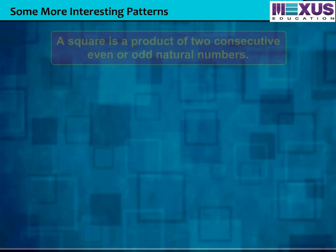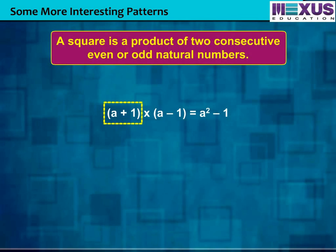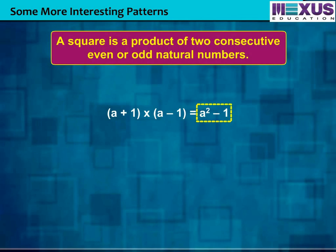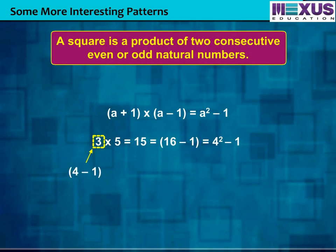Now we will learn about the next pattern of square numbers: the product of two consecutive even or odd natural numbers gives a square number minus one. Let us understand the concept using the formula: (a+1) into (a-1) is equal to a square minus 1. Using two odd consecutive numbers in the formula — 3 and 5 — we get 3 into 5 equals 15, which is one less than the square number 16. We can express this as: (4 minus 1) into (4 plus 1) is equal to 4 square minus 1.